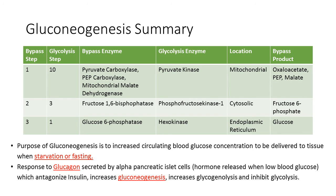After learning the whole pathway of gluconeogenesis, the purpose of this pathway is to increase circulating blood glucose in times of starvation or fasting. This pathway responds to glucagon, which is secreted by alpha pancreatic islet cells and antagonizes insulin. Glucagon increases gluconeogenesis and glycogenolysis — which will be the topic of the next video — and causes inhibition of glycolysis, which will be linked in the description below.